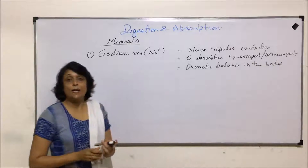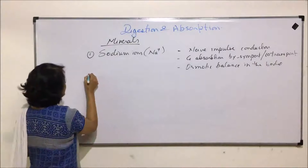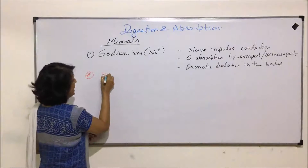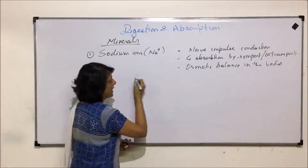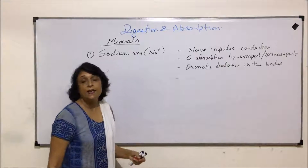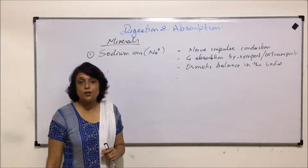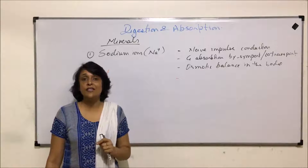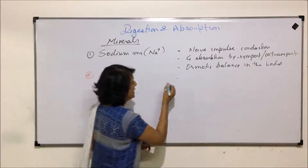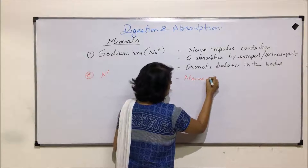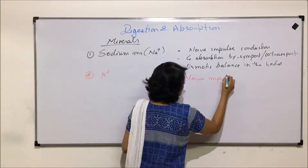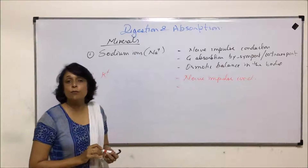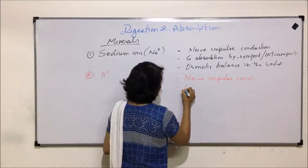The second mineral ion we need is potassium. Potassium ions are also essential for nerve impulse conduction, because it is the sodium-potassium movement that helps in conduction of this ionic movement. So its function is nerve impulse conduction, and potassium ions are also important for maintaining osmotic balance.